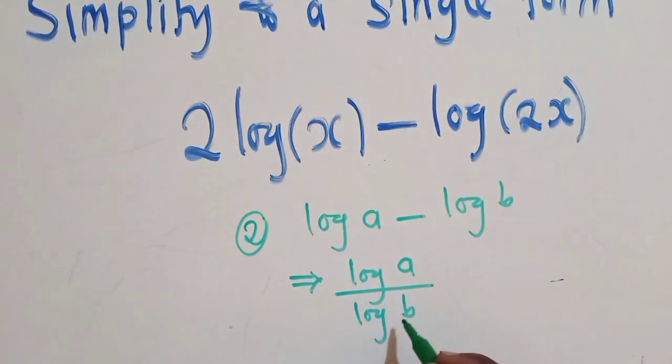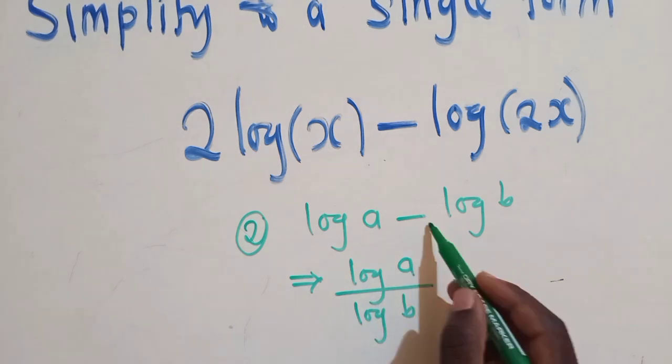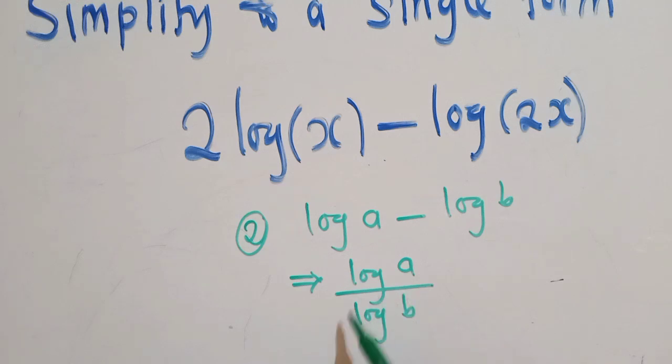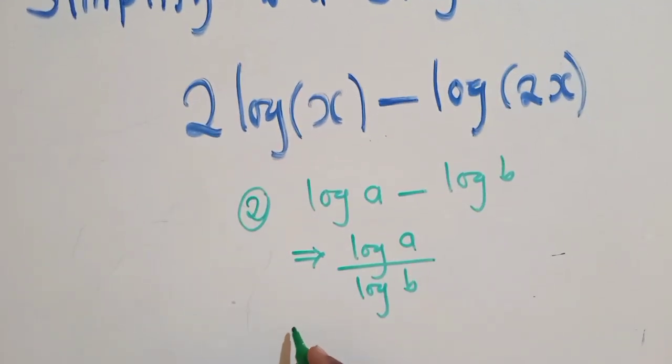So, minus always changes to division. That's how it is in logs. Whatever is here must be the divisor. Once you write it like this, you can simplify it. You say log of A over B.